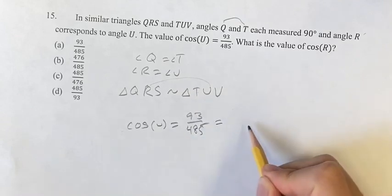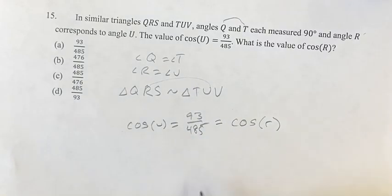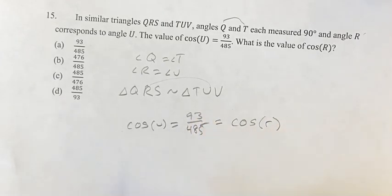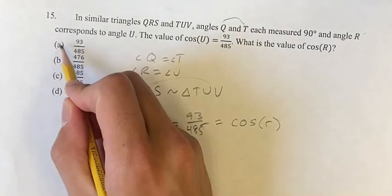Therefore, cosine R is the same as cosine U because they are the same measure of angle. So cosine R, which is what we're looking for in this problem, is 93 over 485, and that's our final answer, A.